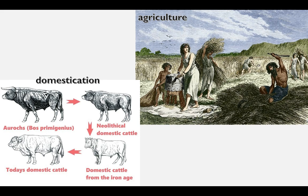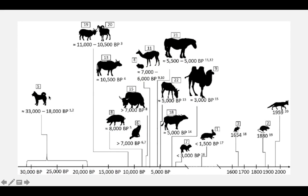Here is a timeline that shows when different animals were domesticated. Probably the first domesticated animal would be the wolf, which became the dog. You can see goats, sheep, then cows and pigs. Some of the later animals domesticated during the ancient period would be rabbits and camels.